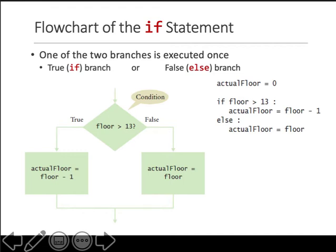So let's look at this piece of code. First, we are setting a variable called actual floor to be 0. Then the next statement is if floor, which is another variable, is greater than 13, set the actual floor to this value; else set the actual floor variable to floor value. So if this condition is true, take this action; else take this action. That's what an if statement is.